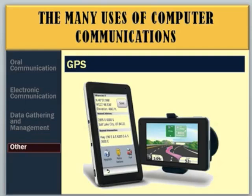GPS allows users to find direction immediately by the use of satellite. Any direction that you need would be right in front of you. Not only have computers developed at the speed of light, but they are also changing the way that people communicate.